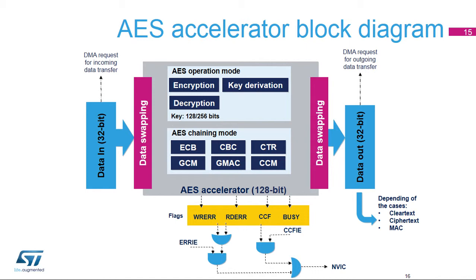The computation complete flag, called CCF, is set by hardware when the computation is complete. An interrupt is generated if the CCF interrupt enable bit was previously set. The BUSY flag, used only with GCM mode, indicates that a higher priority message can interrupt the current message during the GCM payload phase for encryption mode.